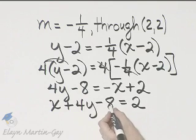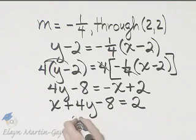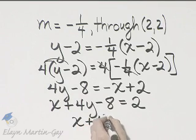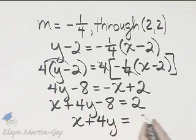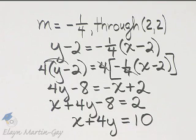And then also, I'll add 8 to both sides. If I add 8 to the left side, I'll have x plus 4y is equal to, and then add 8 to the right side, 2 plus 8 is 10.